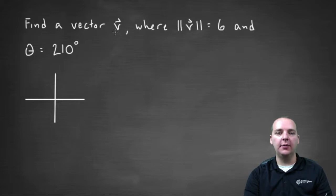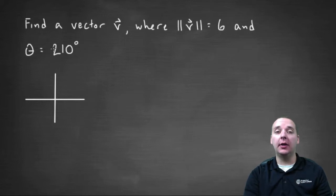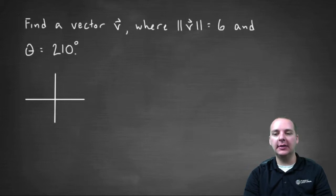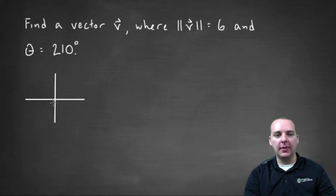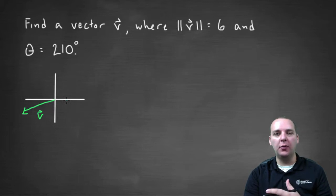We're being asked to find a vector v where the magnitude of v is six, and the angle that the vector makes with the positive x-axis is two hundred and ten degrees. Two hundred and ten degrees is right about here in the third quadrant, and we'll draw it to have a magnitude of six units. We'd like to express this either in component form or using the standard unit vectors.